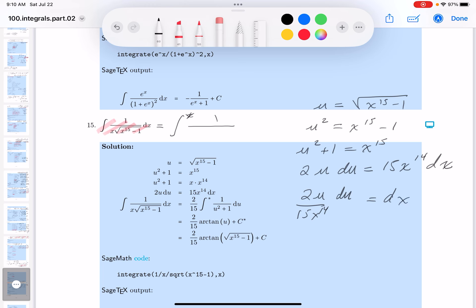Let me write that down. I get my eraser out. And I'm going to write that down. 2u. And then I get 15x to the 14th. And I get du.